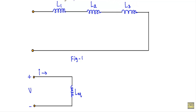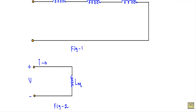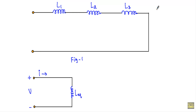The 3 inductors of figure 1 can be replaced by a single inductor as shown in figure 2. If I replace these 3 inductors with this single inductor it will not change the current and voltage property of the circuit. So the equivalent inductance L equivalent will be the equivalent inductance of L1, L2 and L3.